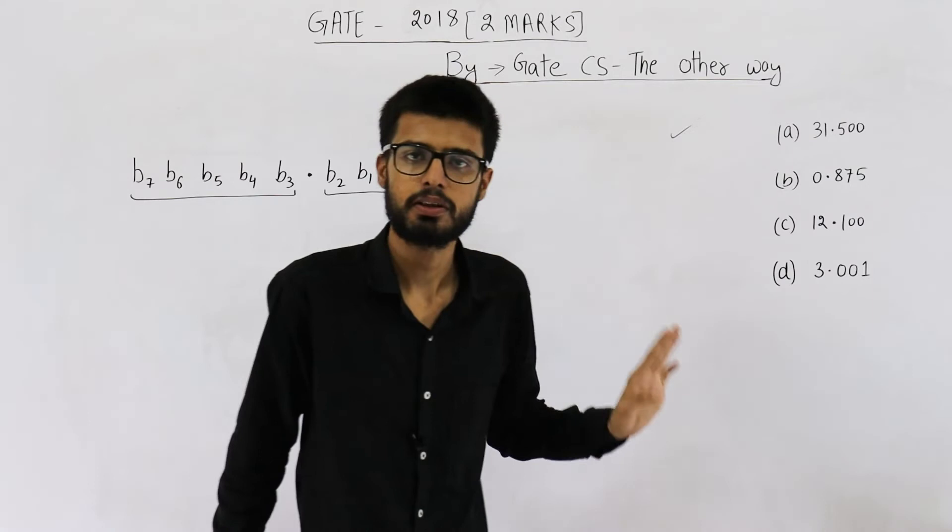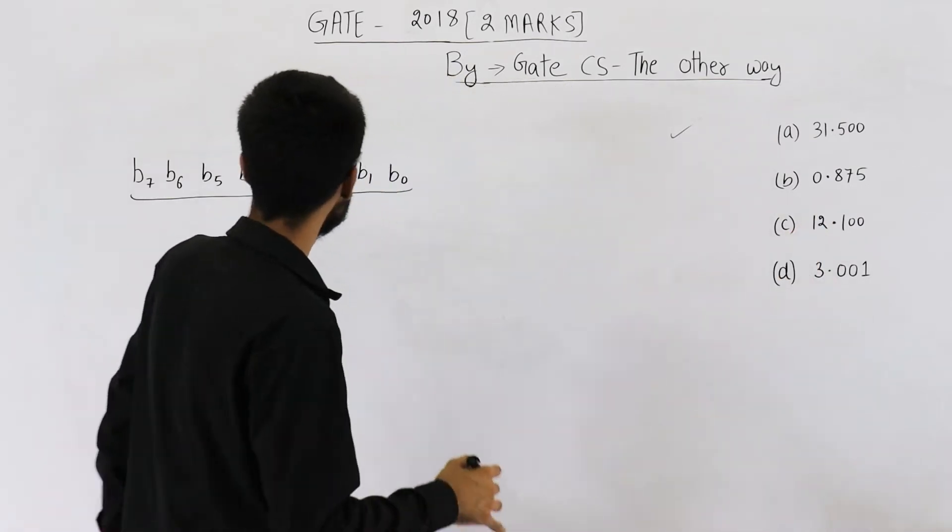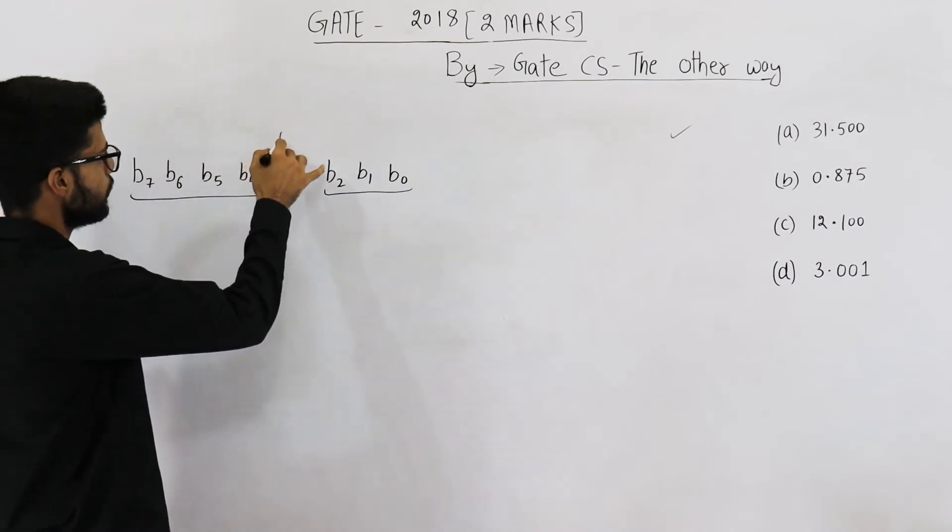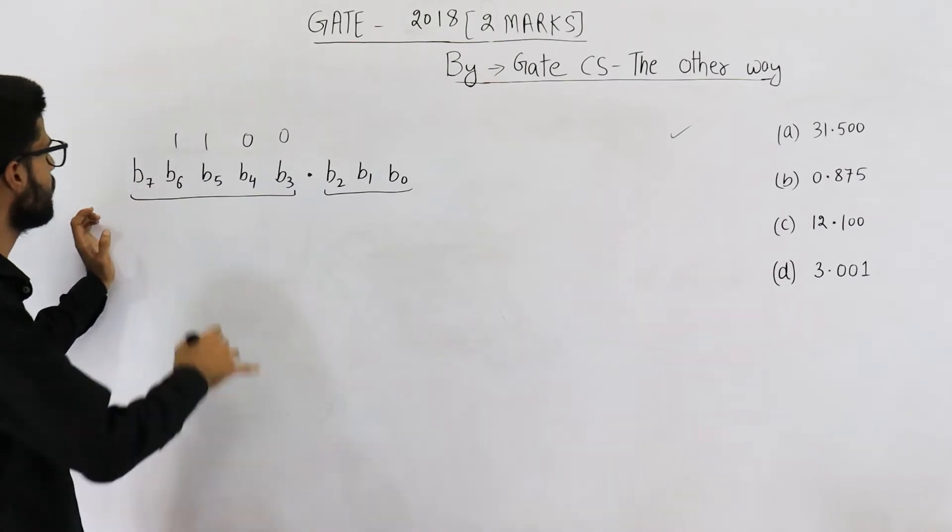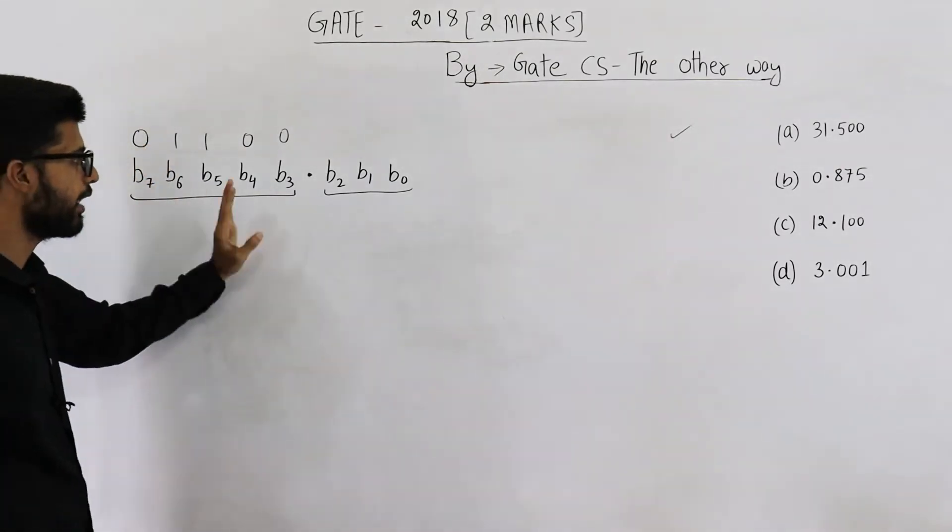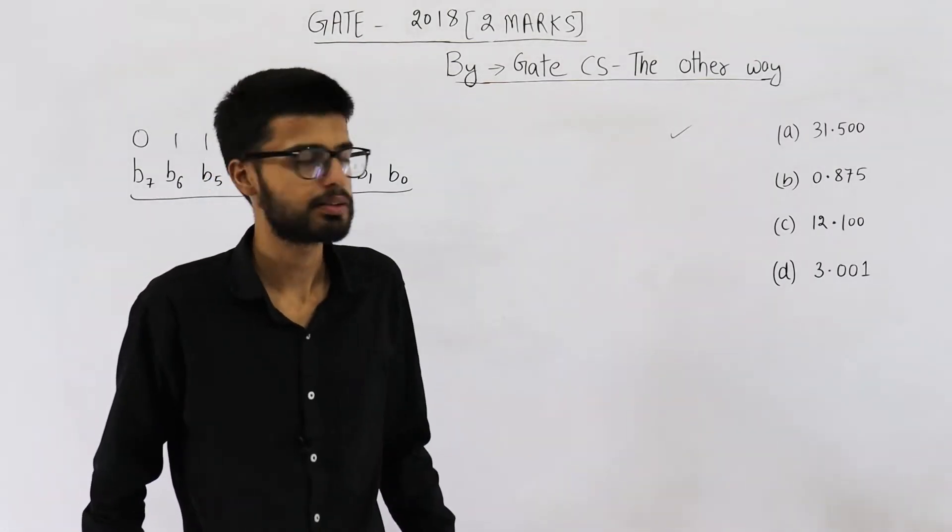See, 0.1 cannot be represented. You can represent 12 because 12 is 1100. So 00001100. This is 12. That means you can make B7 as 0. We have represented 12, but its fractional part will be very long in binary number system.